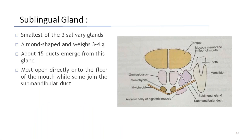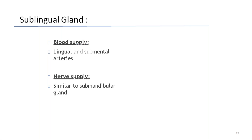Coming to sublingual glands: the sublingual glands are the smallest of the three major salivary glands, almond-shaped, and weigh about 3 to 4 grams. About 15 ducts emerge from this gland; most open directly onto the floor of the mouth while some join the submandibular duct. Blood supply is from the lingual and submental arteries; nerve supply is similar to the submandibular gland.